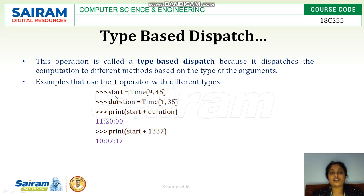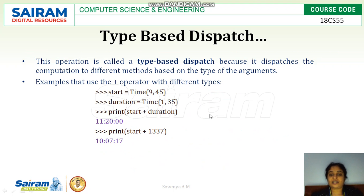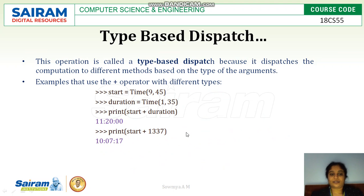So we call this type of methods type-based dispatch. For the previous example, these are the function calls that can be made. We have two objects for the Time class: start with 9 hours 45 minutes, and duration with 1 hour 35 minutes. If we use print(start + duration) as an operator overload, it will call add_time. But if we add an integer value to the object, it will call the increment method.